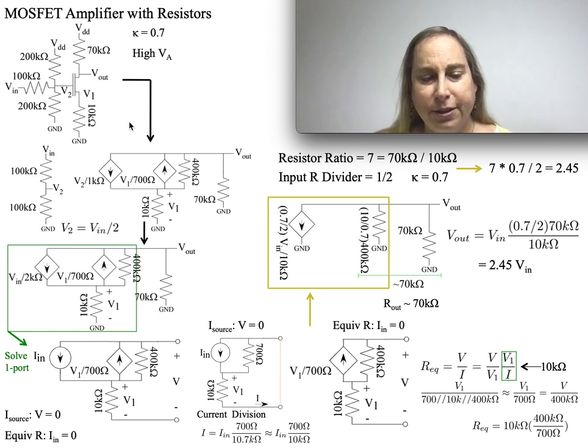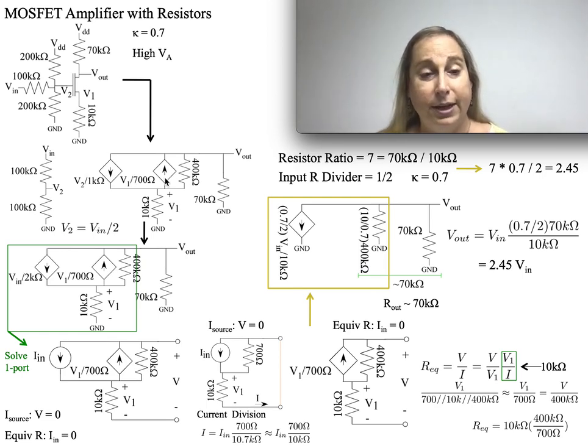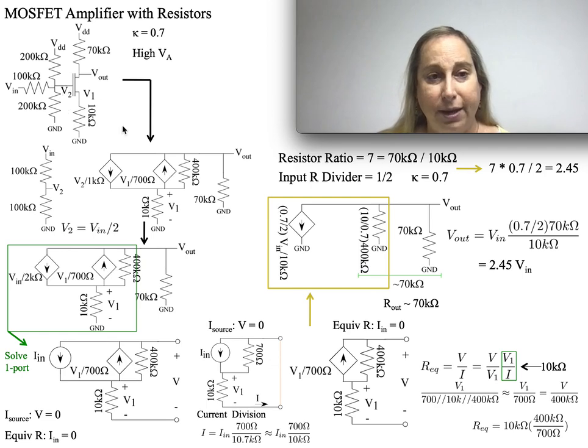When you look at this particular circuit, it turns out you can get a linearized model of the transistor with two voltage-controlled current sources: one related to how things play off the gate, one how they play off the source. Because there's a kappa of 0.7, these are not equal.